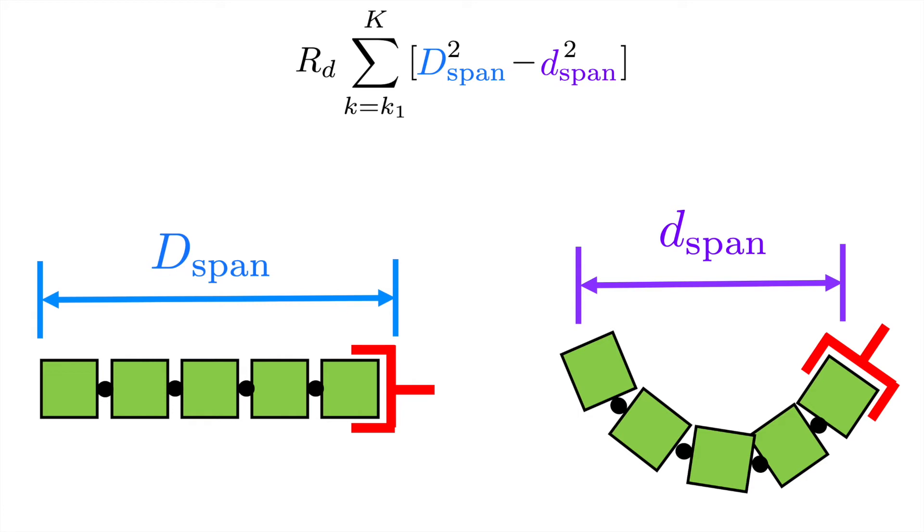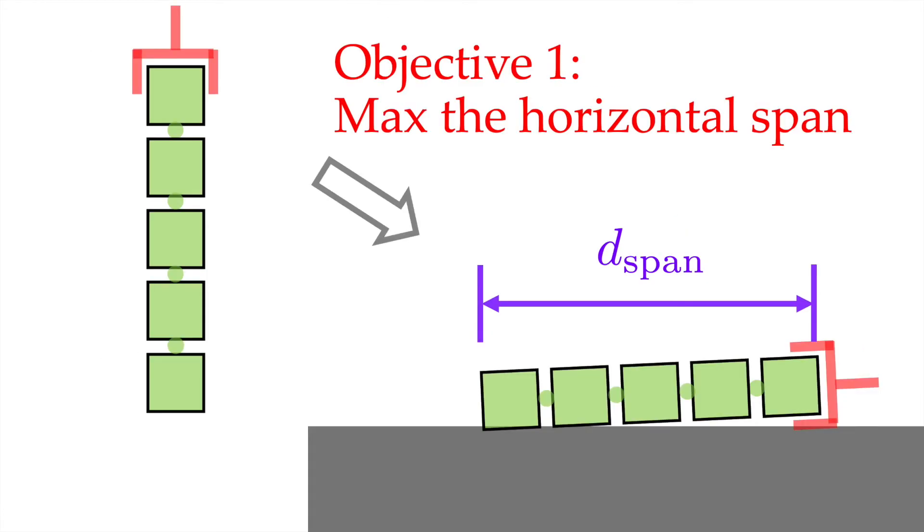Therefore, minimizing the difference between the two terms means that we want to straighten the rope as much as possible. This corresponds to our first objective, maximize the horizontal span.